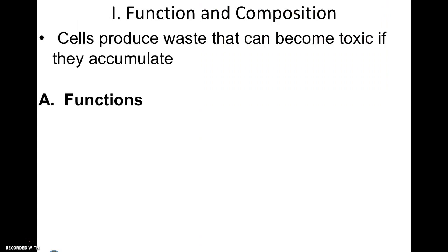Cells produce waste that can become toxic if they accumulate. The reason why we age essentially is because all of these reactions — like cellular respiration, for instance — produce waste. Whenever your body takes a nucleic acid and breaks it down into nucleotides, or takes proteins during digestion and pepsin helps break them down into amino acids, there are toxic byproducts produced. As long as you keep eliminating them, it will make aging not happen so fast.